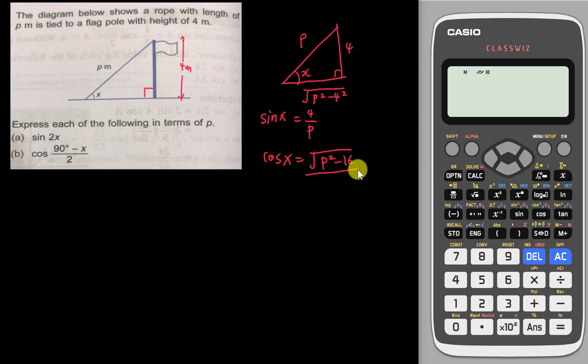All right, then a, they ask about sin 2x. So I know sin 2x is equal to 2 sin x cos x. So therefore it's very simple. I just insert my sin x, 4 over p, and then insert my cos x, square root p squared minus 16 over p.